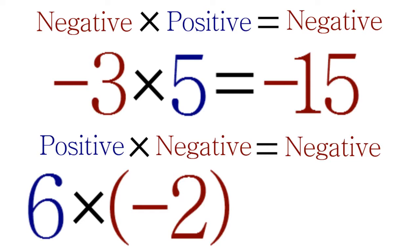We include a set of parentheses around -2 to separate the multiplication sign from the minus sign. Because you're multiplying a positive number by a negative number, the answer is negative.